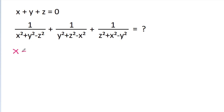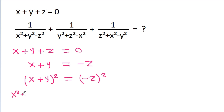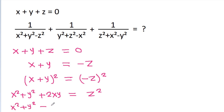We have given that x plus y plus z is equal to 0, so x plus y is equal to minus z. If we square both sides, then x plus y squared will be equal to z square. And it is x square plus y square plus 2xy is equal to z square. So we get x square plus y square minus z square is equal to minus 2xy.